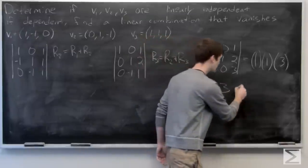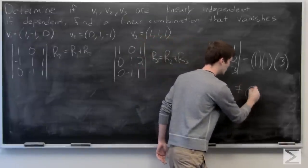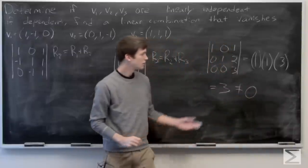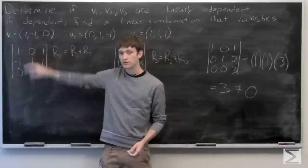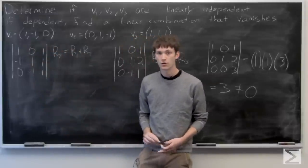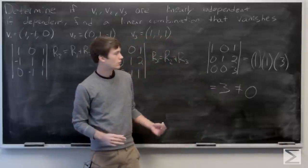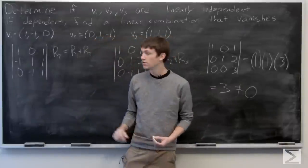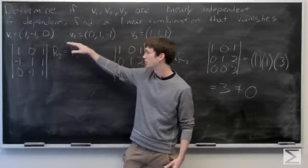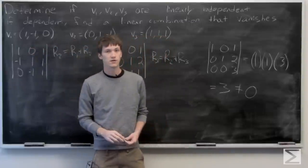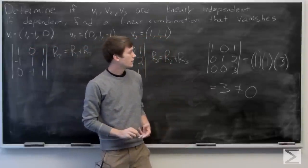Or more specifically, in this case, what we care about is that it's not equal to 0. So that tells us that our vectors v1, v2, and v3 are linearly independent. Thus we can't find a linear combination other than 0 times v1 plus 0 times v2 plus 0 times v3 such that they vanish.